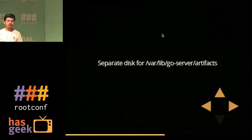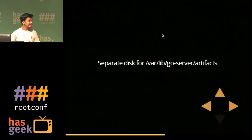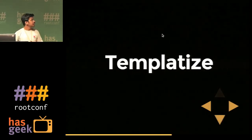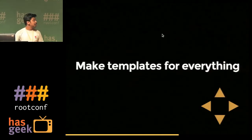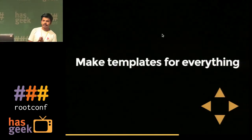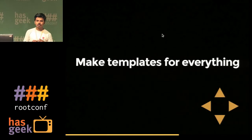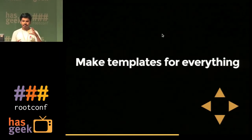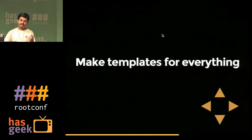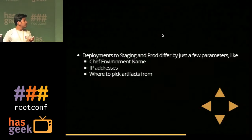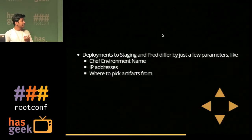It's generally a good idea to use a separate disk or partition. Another thing is to templatize. GoCD gives you a great feature called templating — your builds can be made into a template, and those templates can be parameterized to create pipelines.